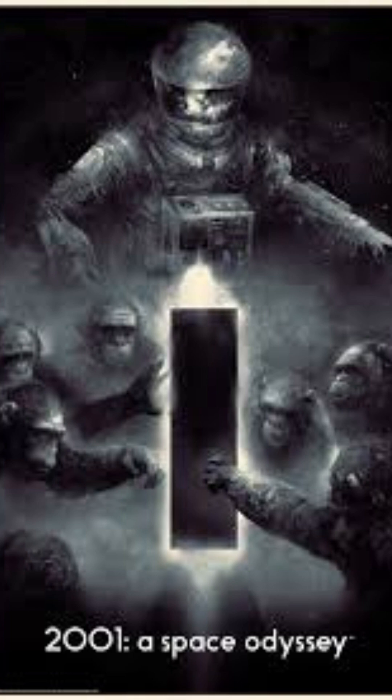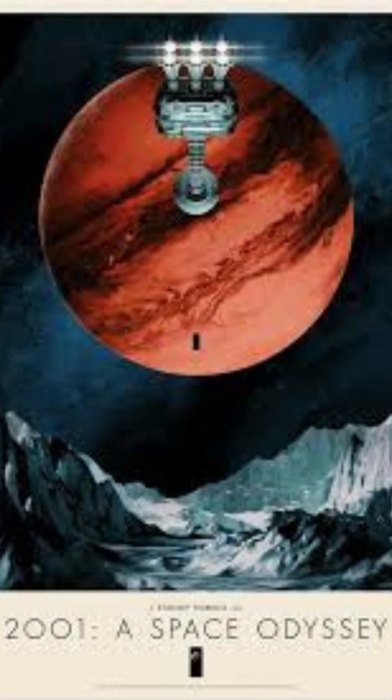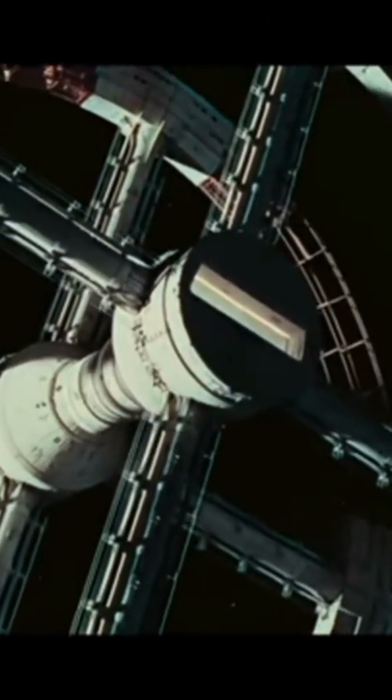The scene then cuts to a spacecraft orbiting Earth, suggesting that the use of tools and weapons marked a crucial step in humanity's evolution. The rest of the film explores how humanity's progress in technology and space exploration may lead to further evolution. The film also highlights the potential dangers of technology, such as the malfunction of the HAL 9000 computer, which becomes homicidal, and the disastrous consequences of relying too heavily on technology.